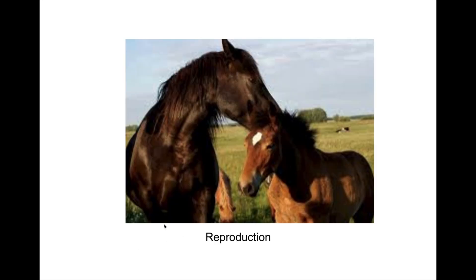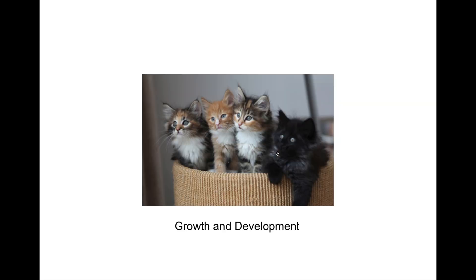All living things reproduce, just like this horse and its baby. All living things are born in a more immature and smaller form, and that applies to individual cells too. Over time they grow and develop and become mature. So these kittens are born and then they are going to develop and grow into big cats.